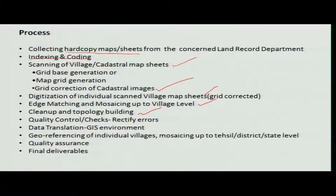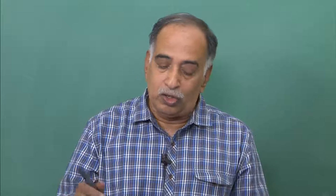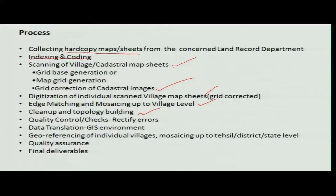After mosaicing, you clean up the topology. Cleaning up the topology means rectifying digitization errors and recording errors. A quality check is done by the person in the land record department — someone who knows about cadastral service — who checks for errors.